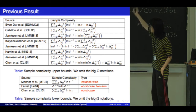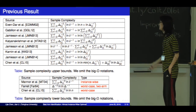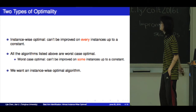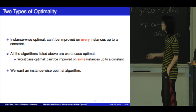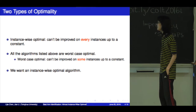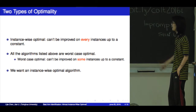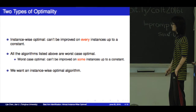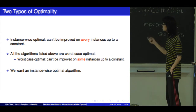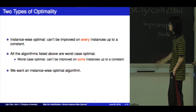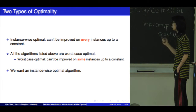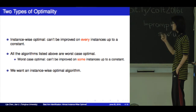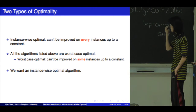There are a lot of works on this problem. But actually, there are two types of optimality here. The first one is instance-wise optimal — that is, the algorithm cannot be improved on every instance up to a constant. But all the other algorithms listed above are worst-case optimal, meaning they cannot be improved on some instance up to a constant. Of course, we want an instance-wise optimal algorithm.